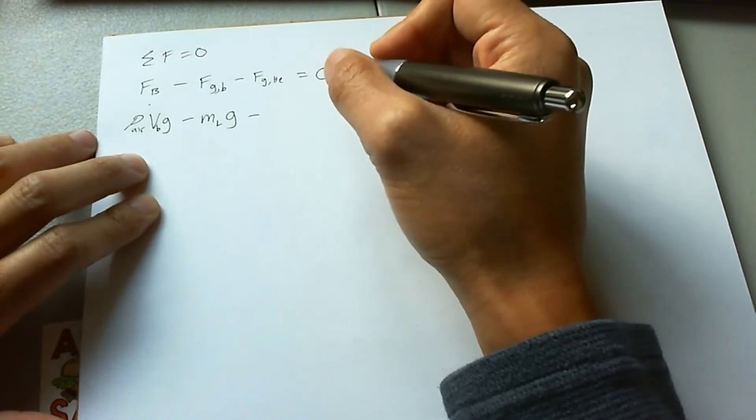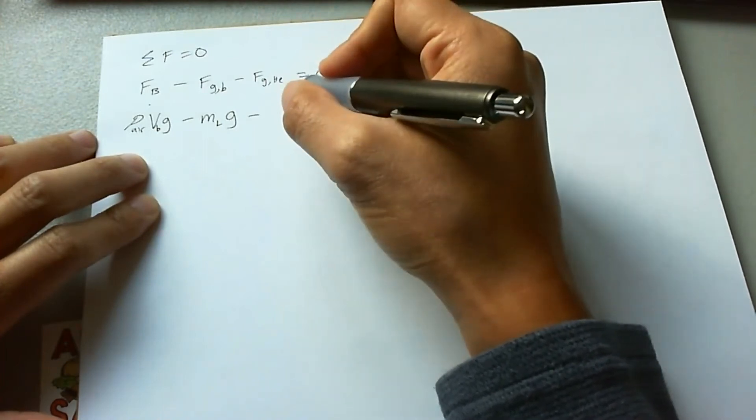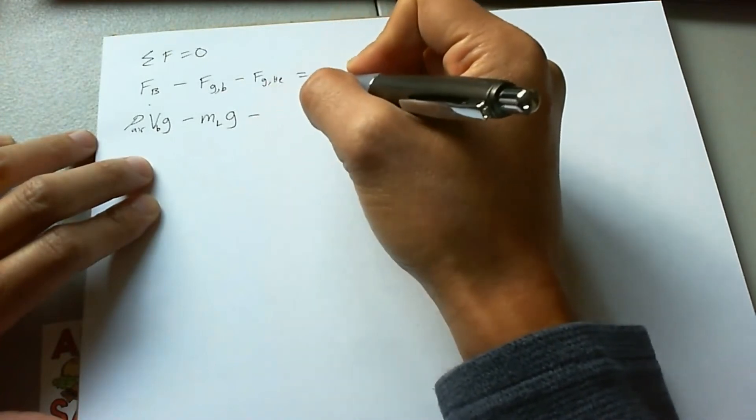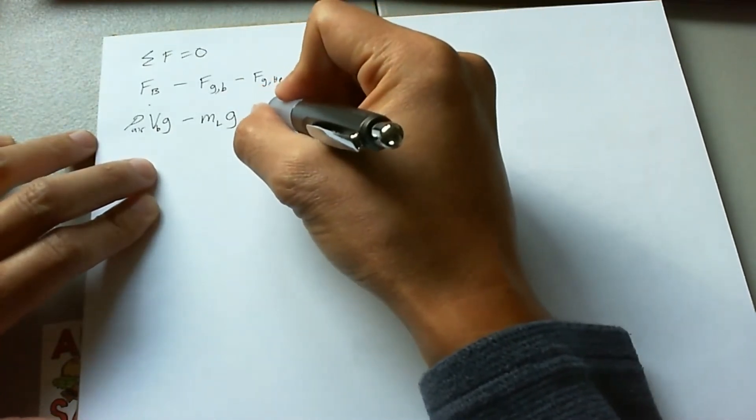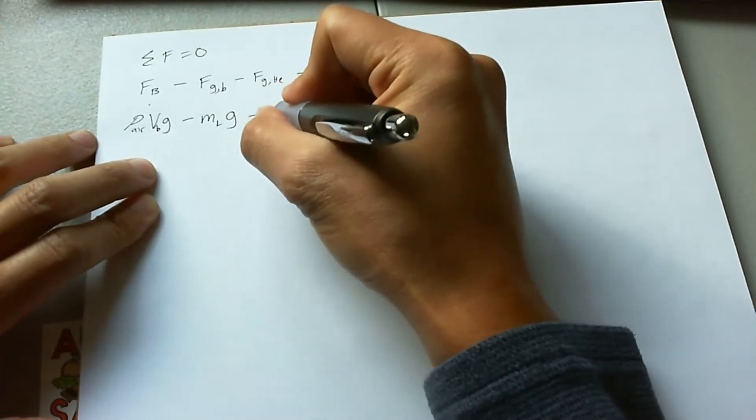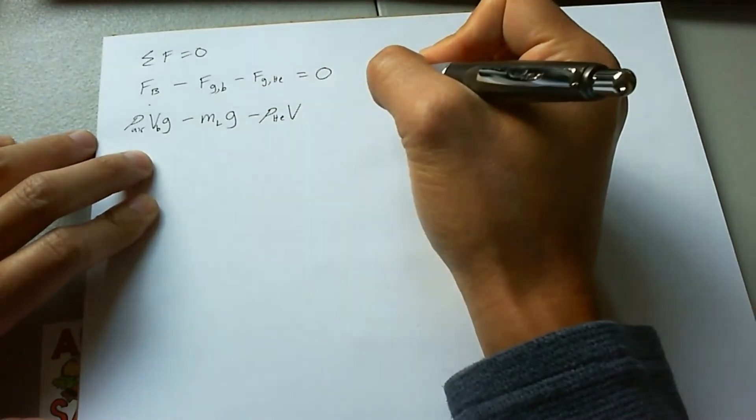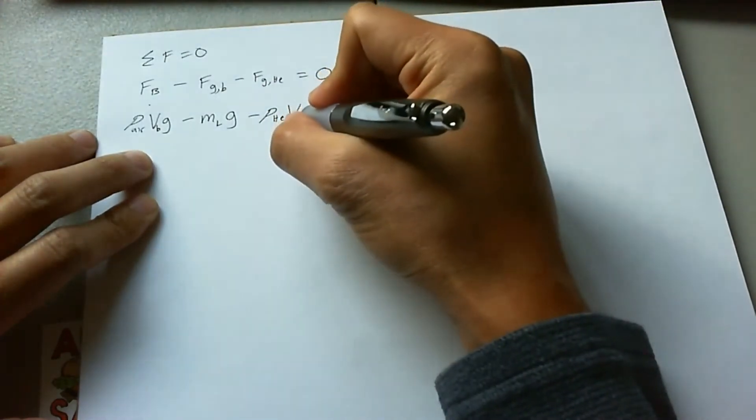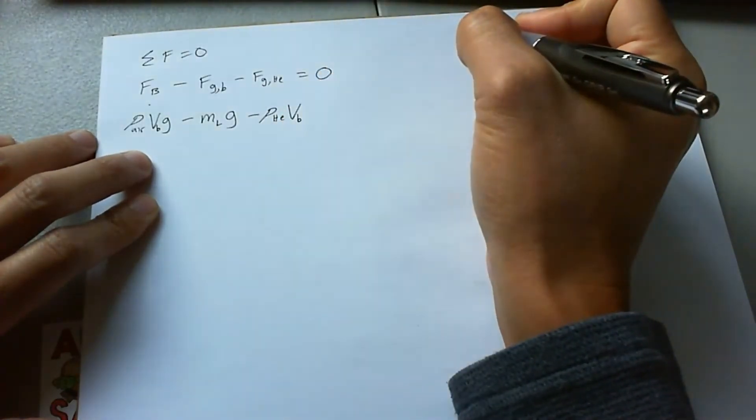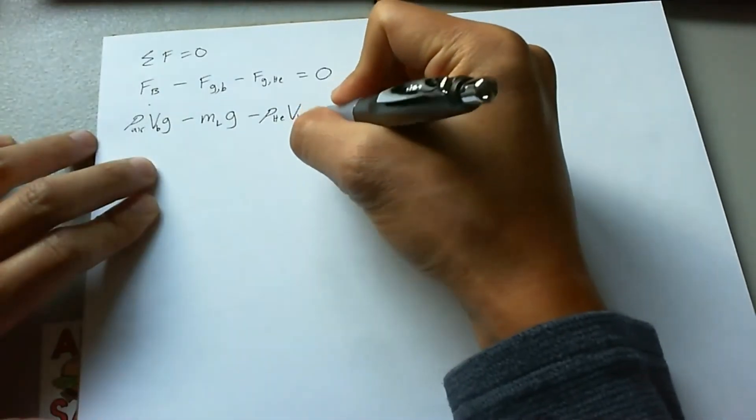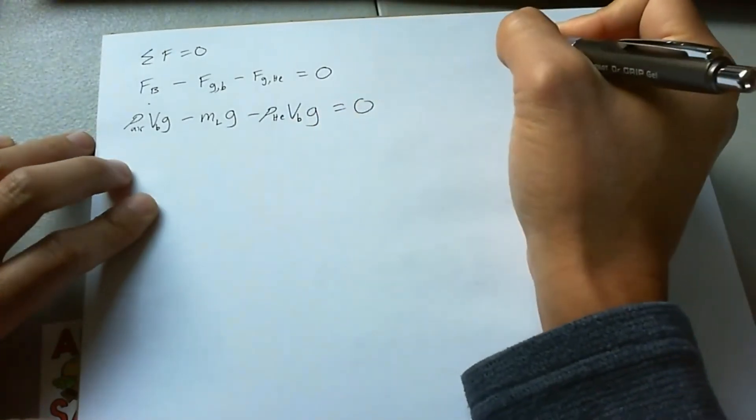We just know that the helium takes up a certain volume V. So what we can do is we can actually say instead of mass, we say the density of helium times the volume in which the helium takes up. Evidently, that's the volume of the balloon as well. So you can say V sub B, and then it times it by G. All of this is equal to zero.